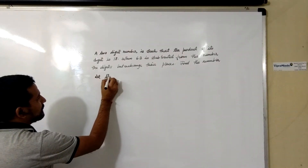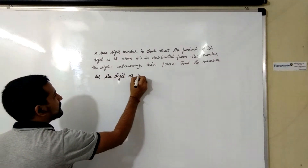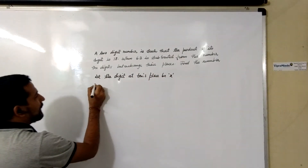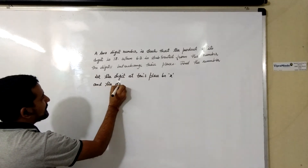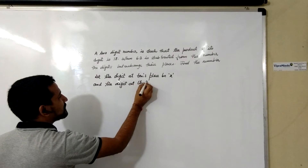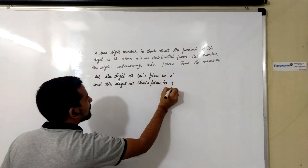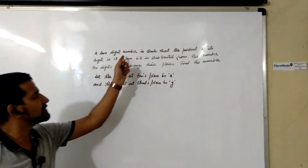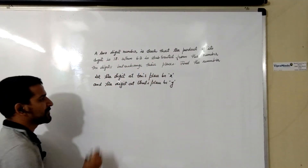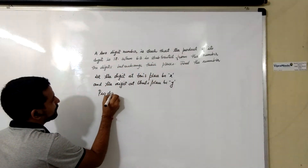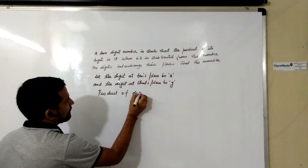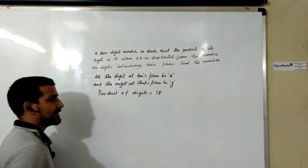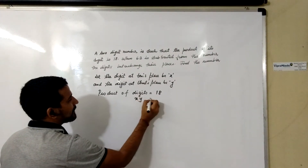We will let the digit at the tens place be X and the digit at the units place be Y. What is given here is that the product of its digits is 18 — that is, the tens place digit multiplied by the units place digit equals 18. That means X × Y = 18.